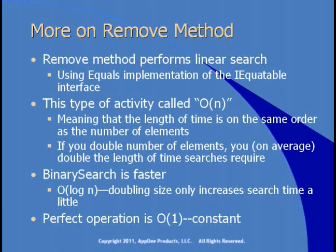A perfect operation would be O(1) — constant. We'll actually find some behavior that is nearly O(1), where even if you double, triple, or ten times the size of the list, the behavior doesn't take any longer. The remove method, however, is not one of those — it gets slower the more items you add to the list. It's time to look at some behavior of the List class with a demo.